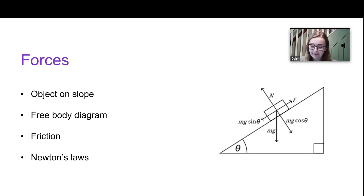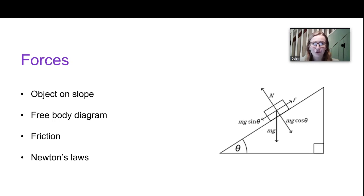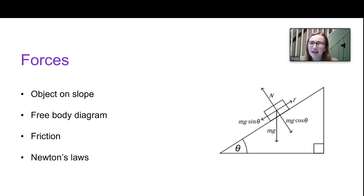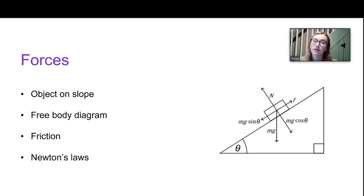The next approach to consider is using forces. Forces are going to be useful in situations like an object sitting on a slope where you need to resolve different forces. If the question asks you to draw a free body diagram, it's very likely you'll want to use forces. If friction is involved — for example, if you're given a coefficient of dynamic friction — you'll likely need to work out the force. A reference to Newton's laws in the question is also a strong hint that a forces approach is needed.